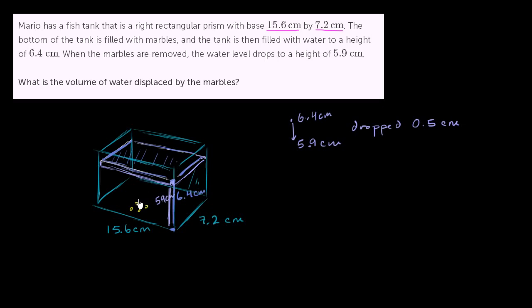When you put the marbles in, it takes up more volume. It pushes the water up by that volume. When you take it out, then that volume gets replaced with the water down here, and the water level goes back down to 5.9 centimeters.